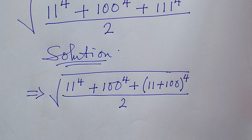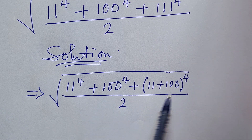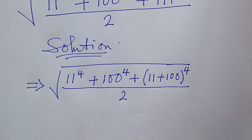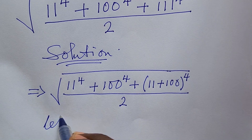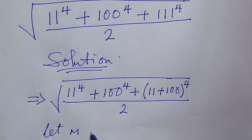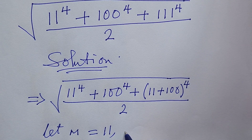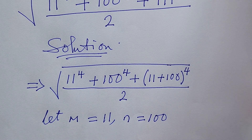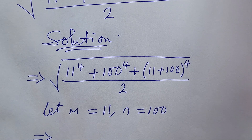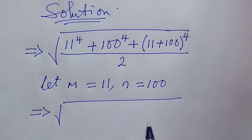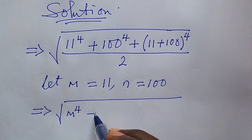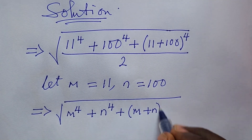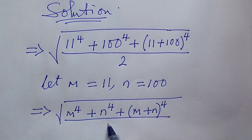Now we can do some simple substitution here. Let m equal 11 and let n equal 100. We substitute everything so our expression now becomes the square root of: m to the power of 4 plus n to the power of 4 plus (m plus n) all to the power of 4, everything all over 2.